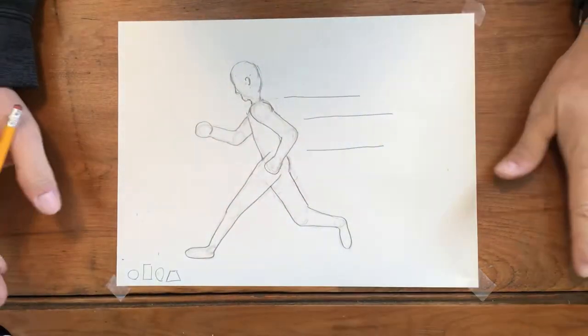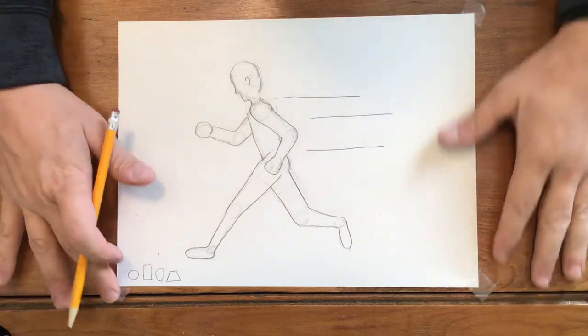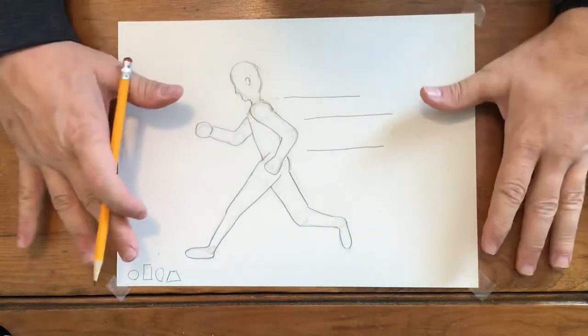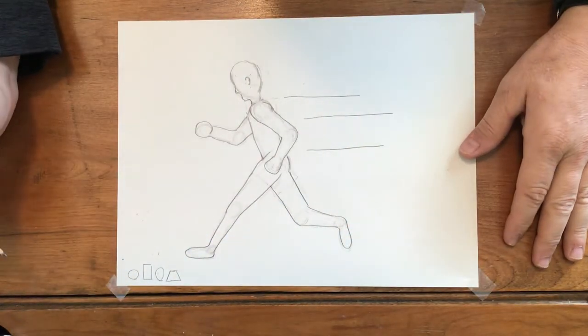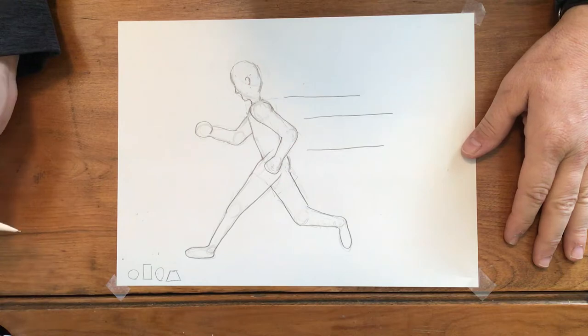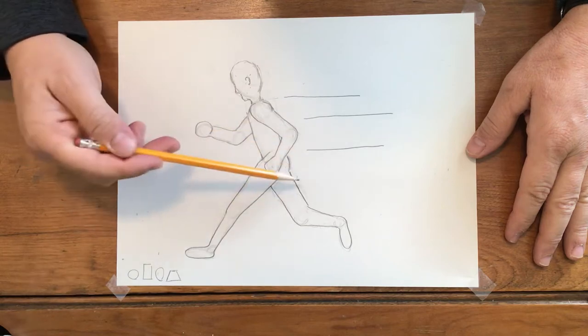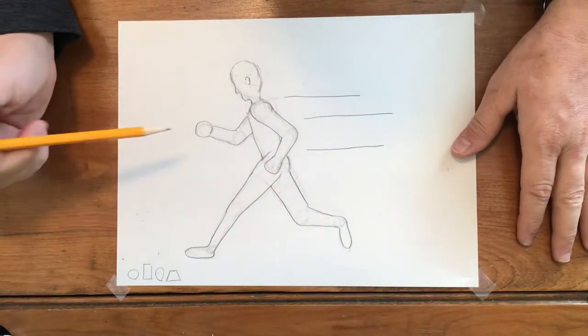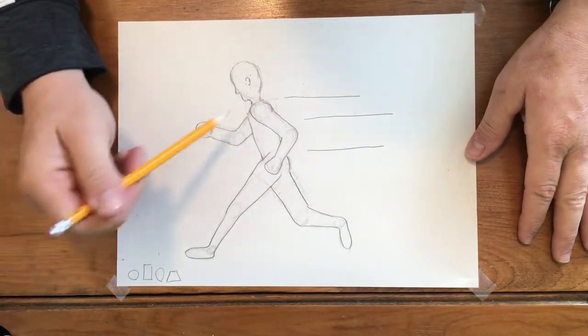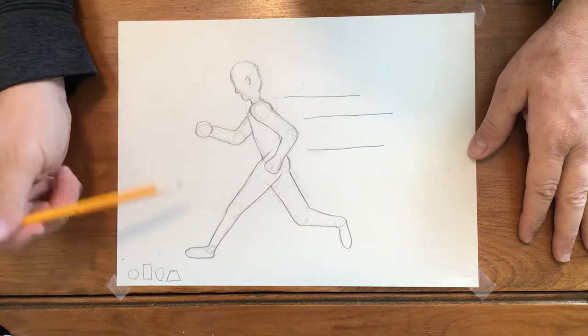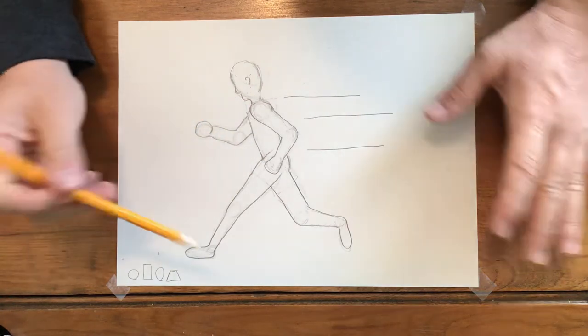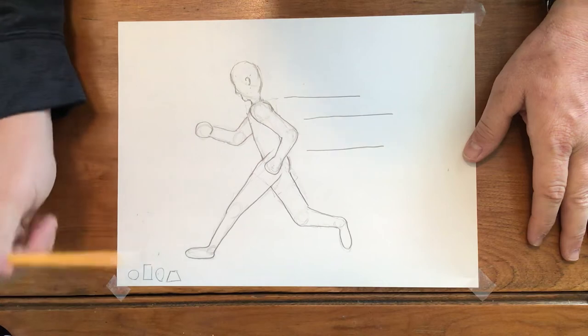We have a person running. Now what we need to do is add a background. Remember we need to fill up the space. We always talk about fill up the space. Like last week I got a lot of drawings of figures where there's a little bitty figure right in the middle of the paper, nothing else on it. Today we're going to work on not only adding motion with our figure but adding a background—fill up the space.